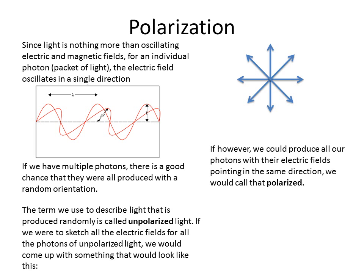However, if we could produce all of our photons with the electric fields pointing in the same direction, say the vertical direction, then we would call that light polarized. And we would designate it by a double arrow just pointing in one direction. So this is what we would call polarized light.